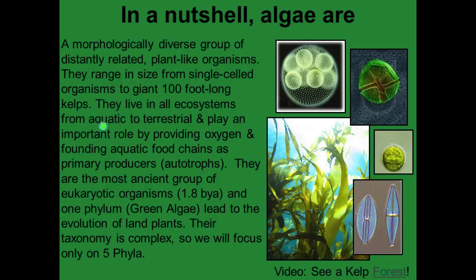Algae range in size from a single-celled organism to giant 100-foot-long kelps. They live in all ecosystems from aquatic to terrestrial, and play an important role by providing oxygen and founding aquatic food chains as the primary producers or autotrophs. They are the most ancient group of eukaryotic organisms, about 1.8 to 2.5 billion years ago. One phylum — the green algae — led to the evolution of land plants. Their taxonomy is complex, so we'll focus only on five phyla.